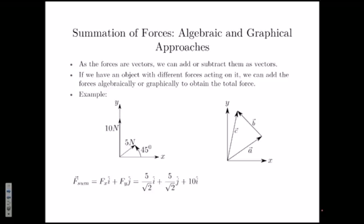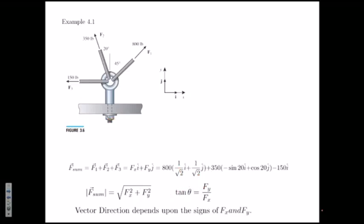We talked about addition of vectors — let's see if we can do something similar with forces. Forces are vectors, so it's easy. If I have a force of 5 Newtons applied in one direction and a 10 Newton force in another direction, all I have to do is write each force along x and y and add them together. The x-component of F would be F cos 45, giving us 5/√2 for both components, and the 10 Newton force is entirely along j-hat. This is an example from your textbook, Example 4.1.